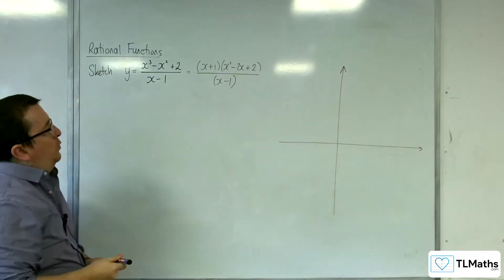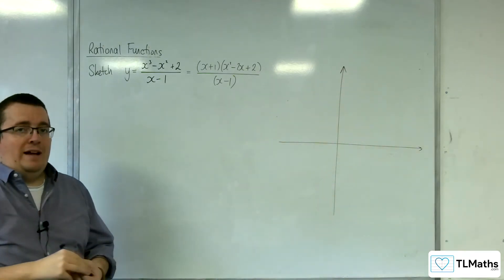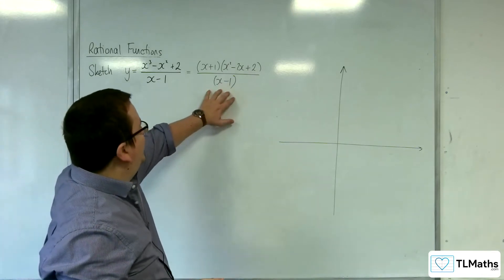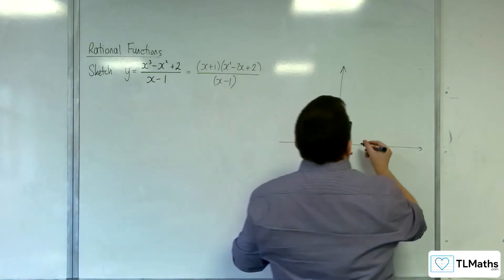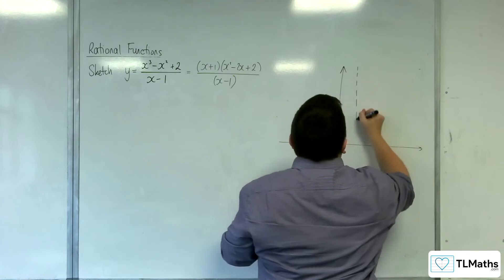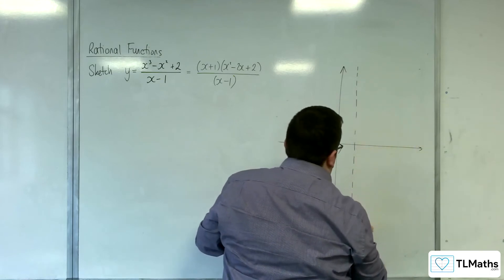So first of all, vertical asymptotes, that's where the denominator is 0, so there will be one x equals 1. That's where the denominator is 0, so x equals 1.